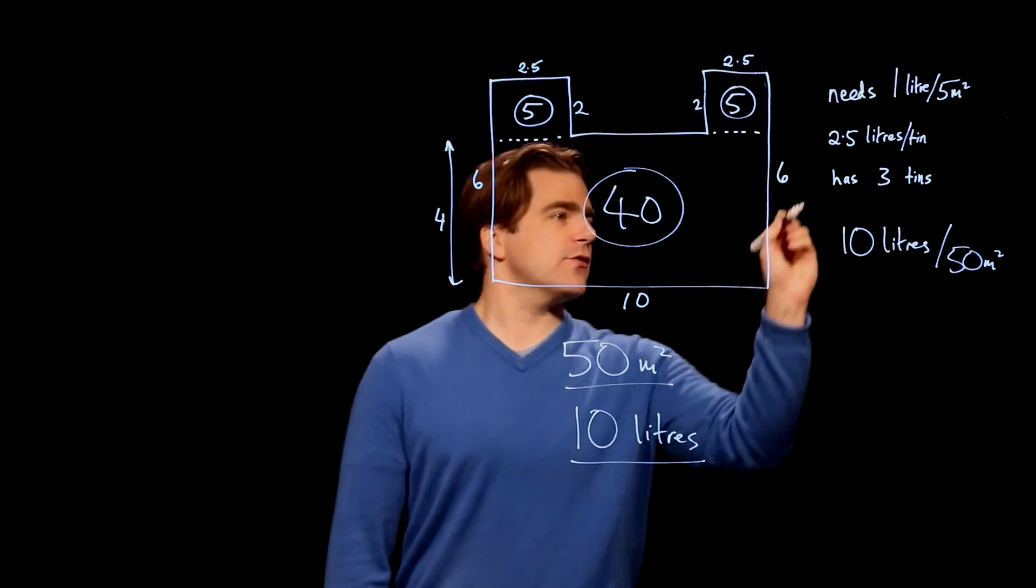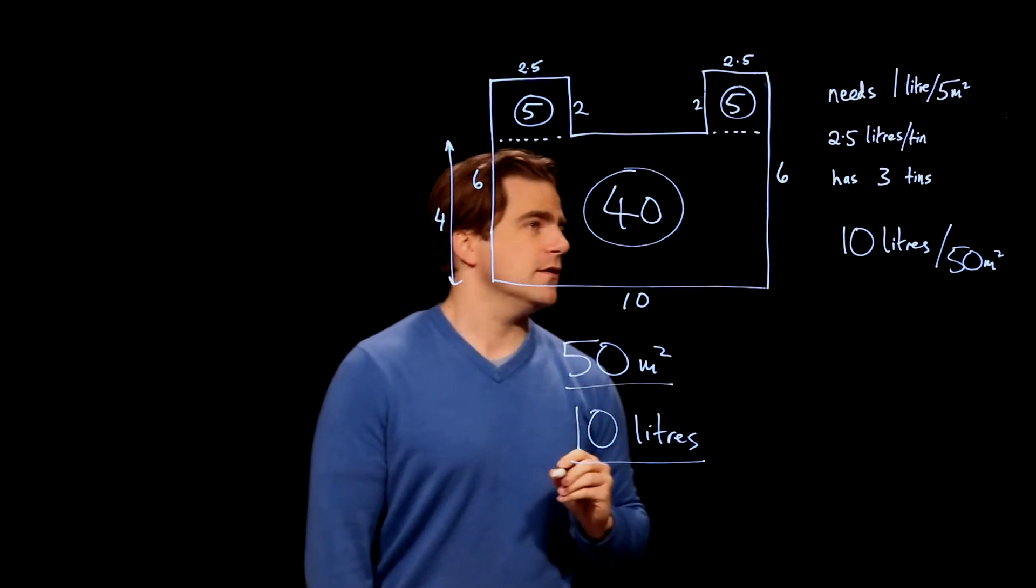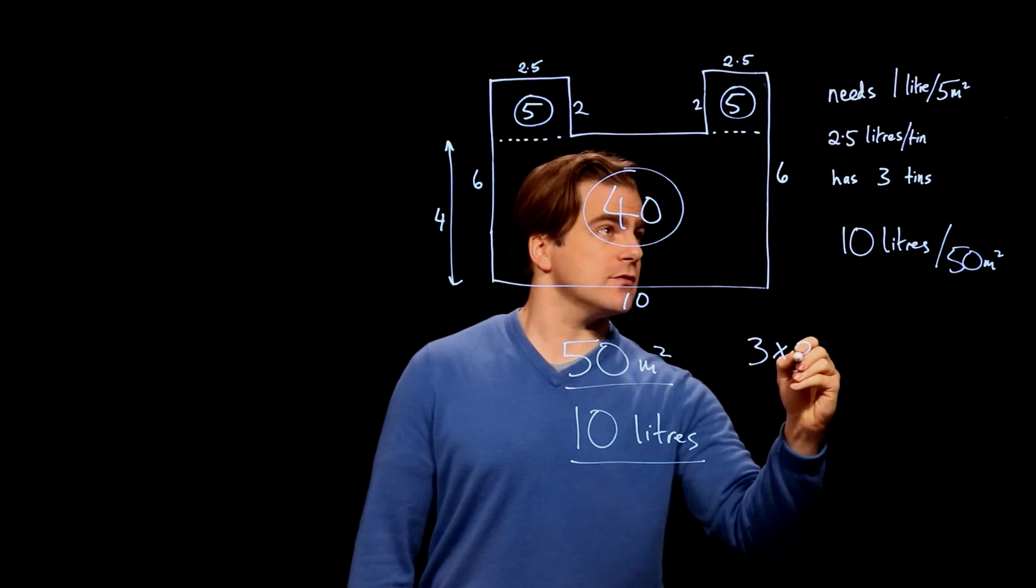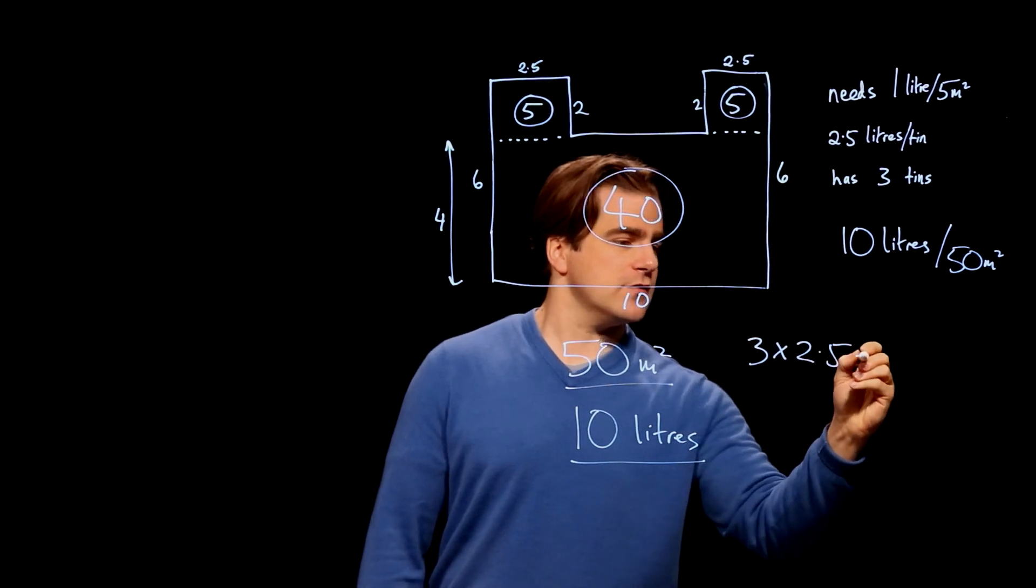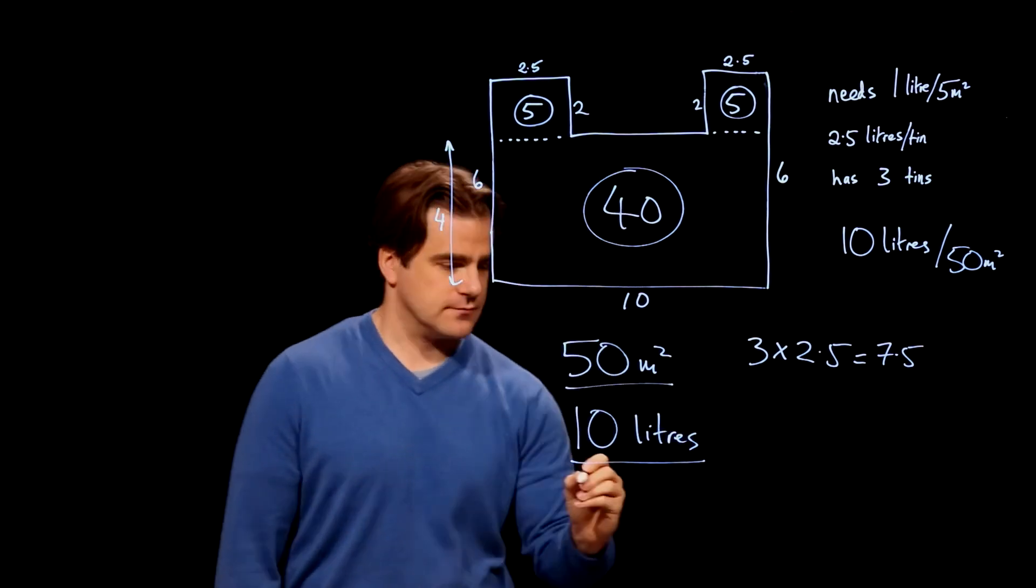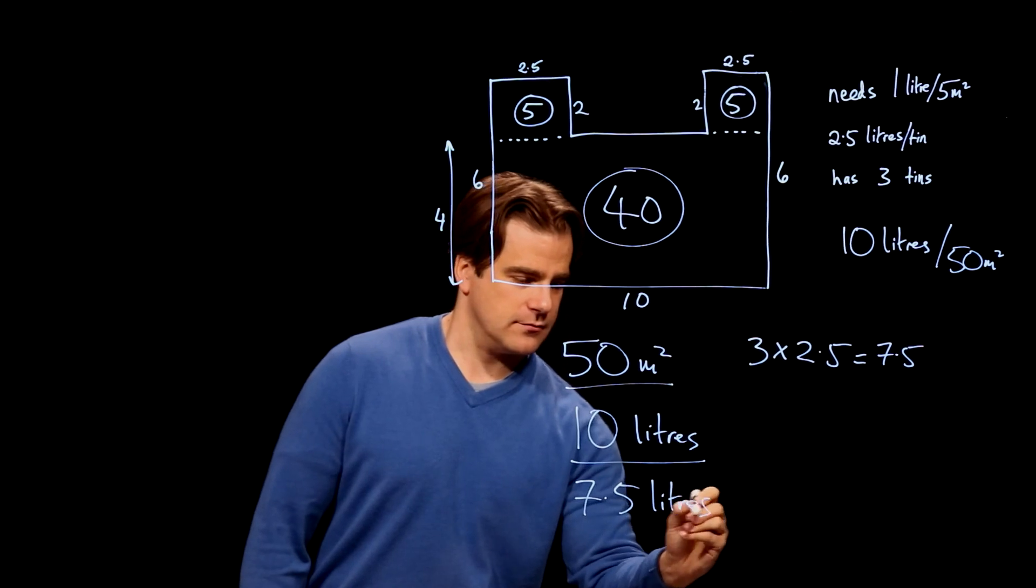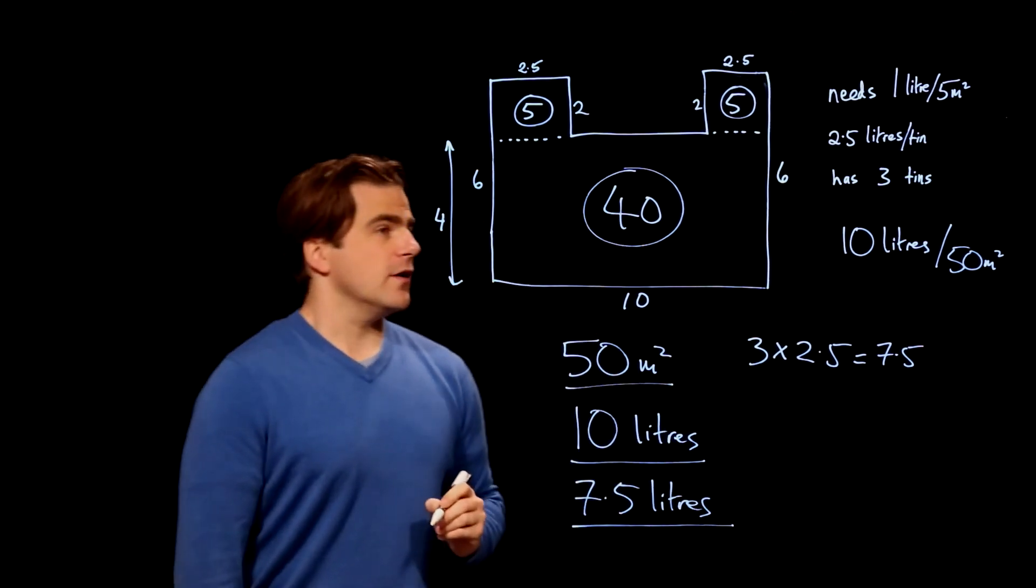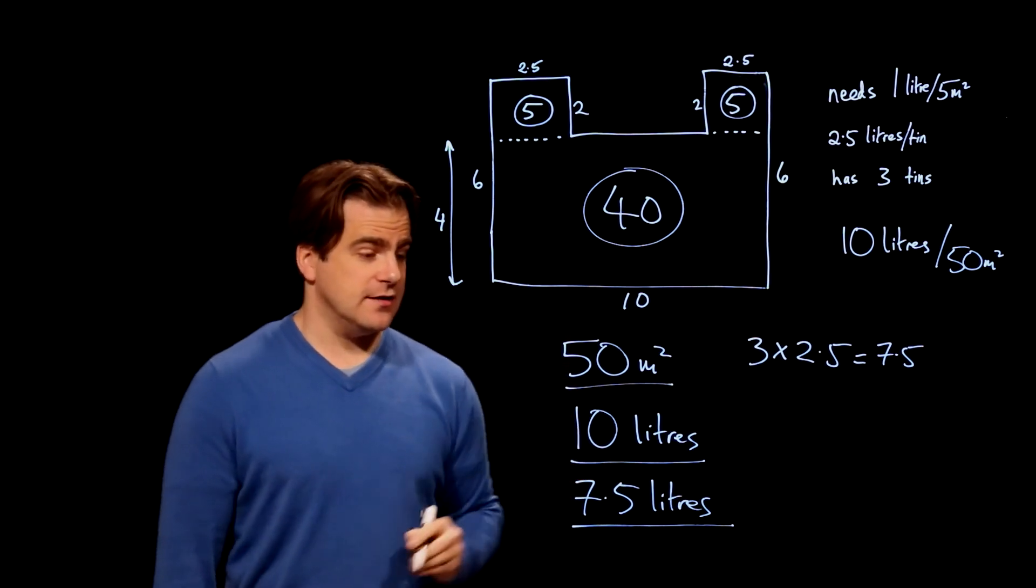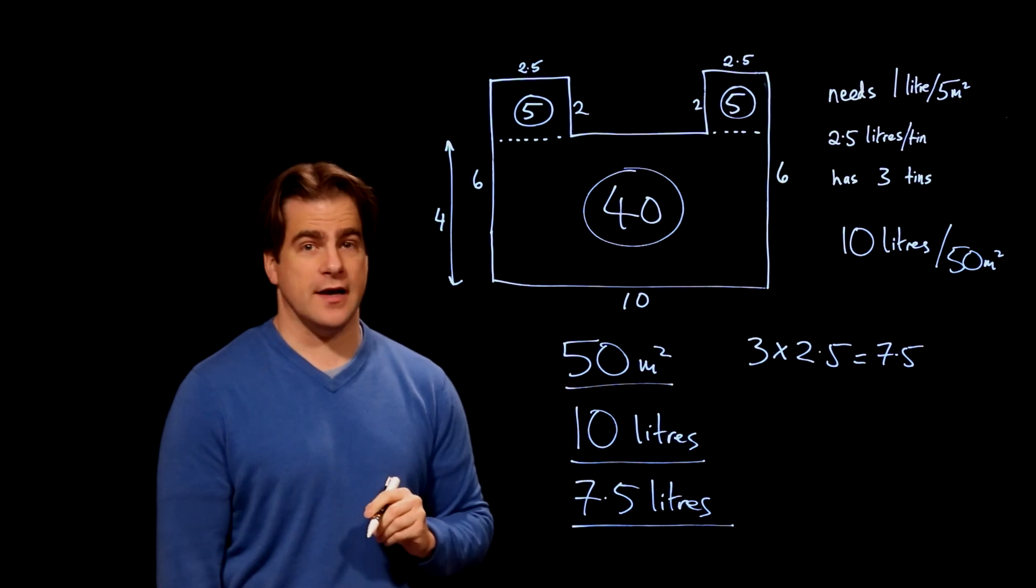Okay, she's got 3 tins and 2.5 litres in every tin. So she must have 3 times 2.5, which is 7.5 litres. So she needs 10 litres. And poor Angie has only been given 7.5 litres by her evil male overlords.